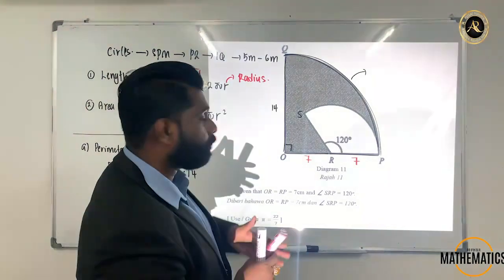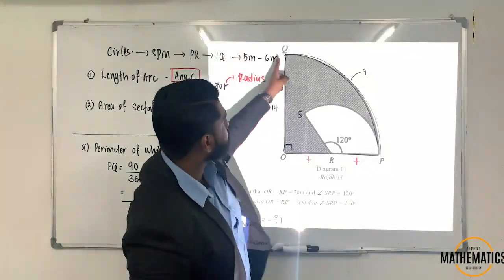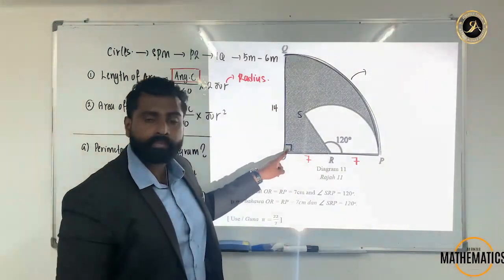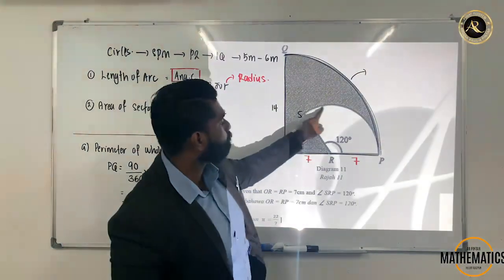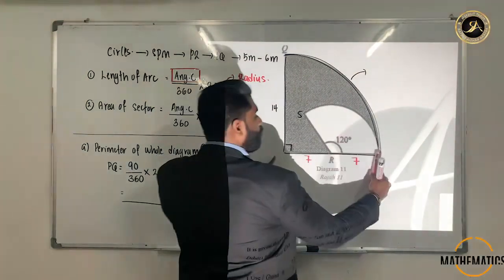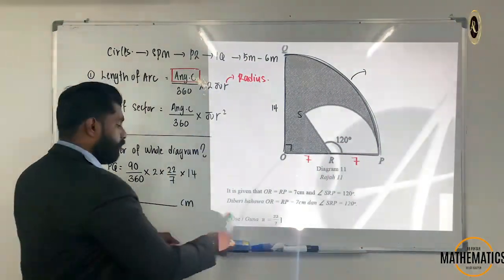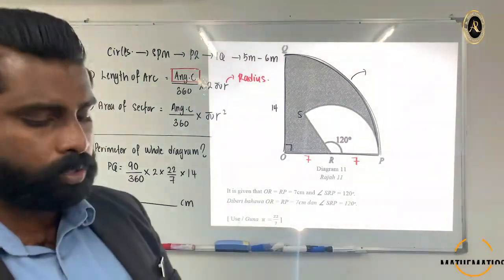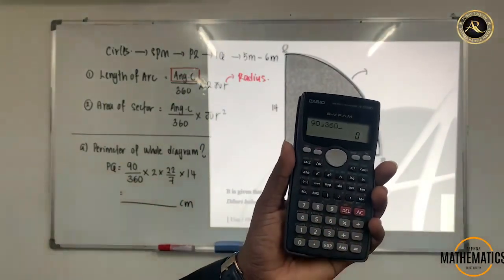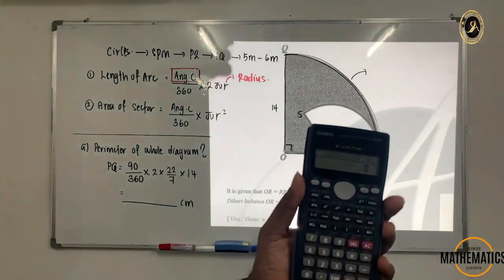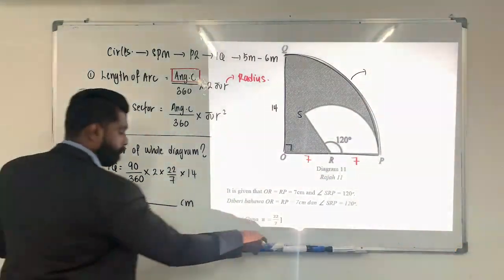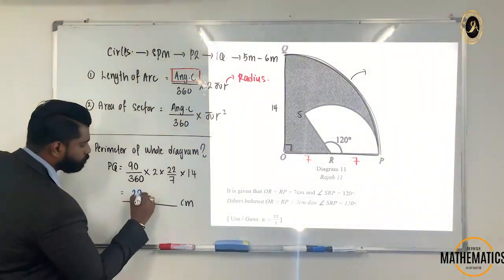Let me explain once more. To find QP, the angle at center is 90 degrees because it is a quadrant. If I want to find SP, I would use 120 degrees, with radius 14. In your calculator, press: 90 ÷ 360 × 2 × 22/7 × 14. You get 22. So QP = 22 cm.